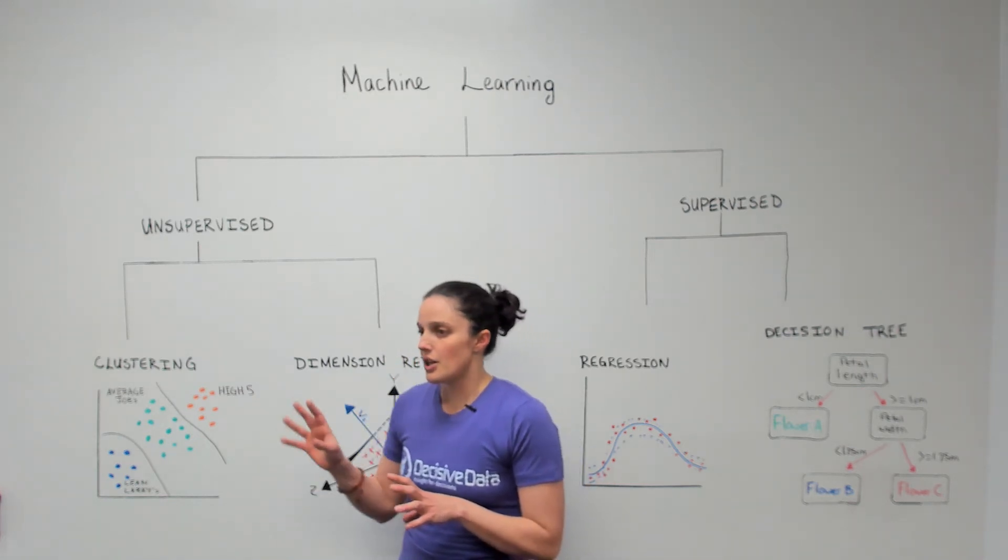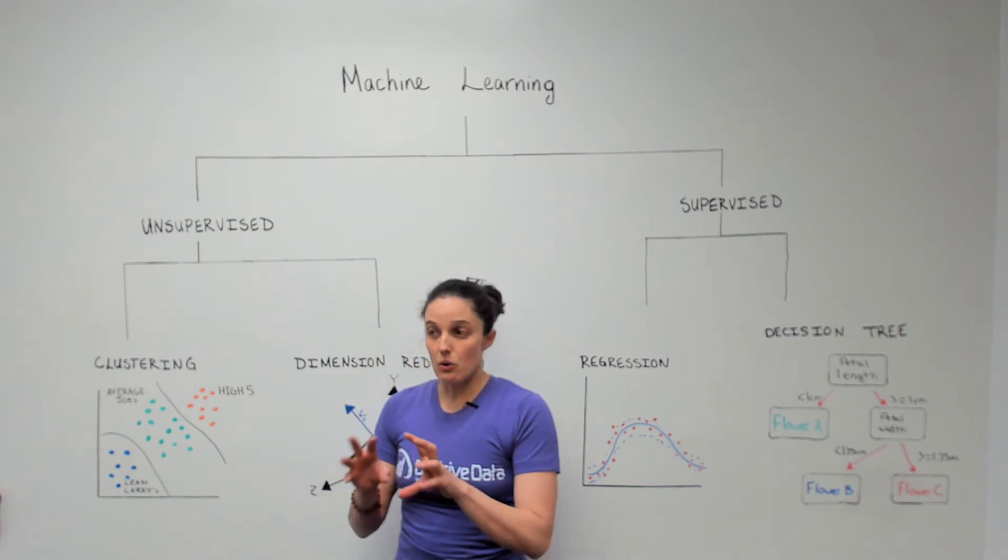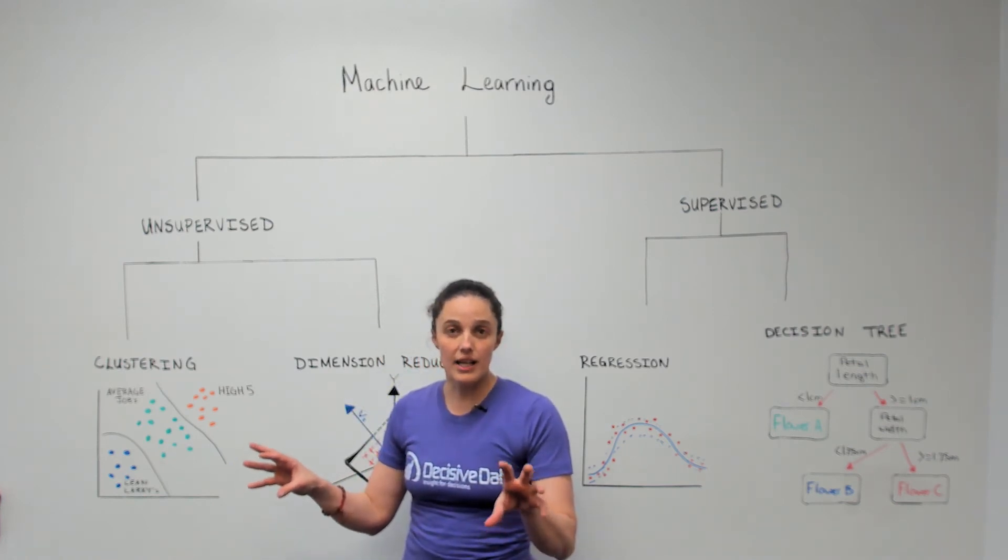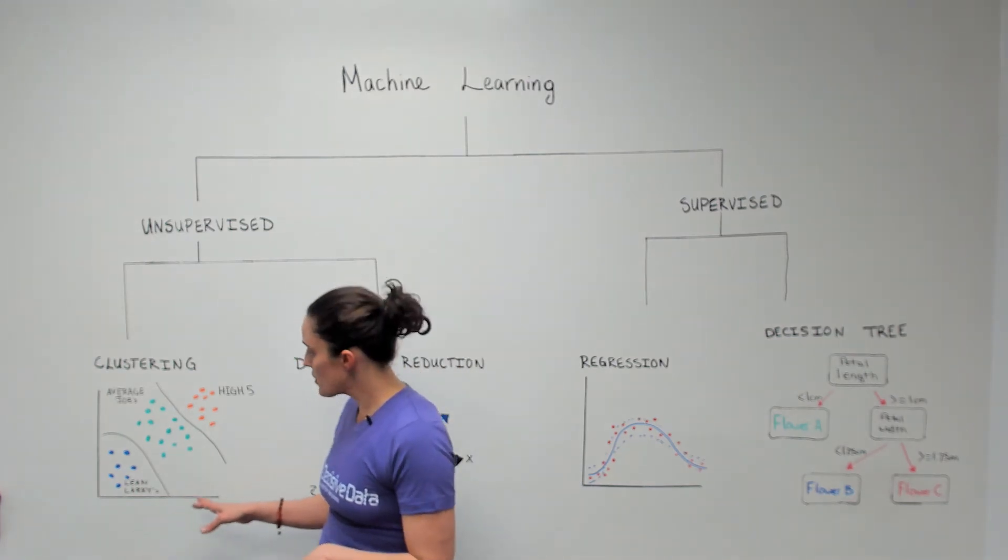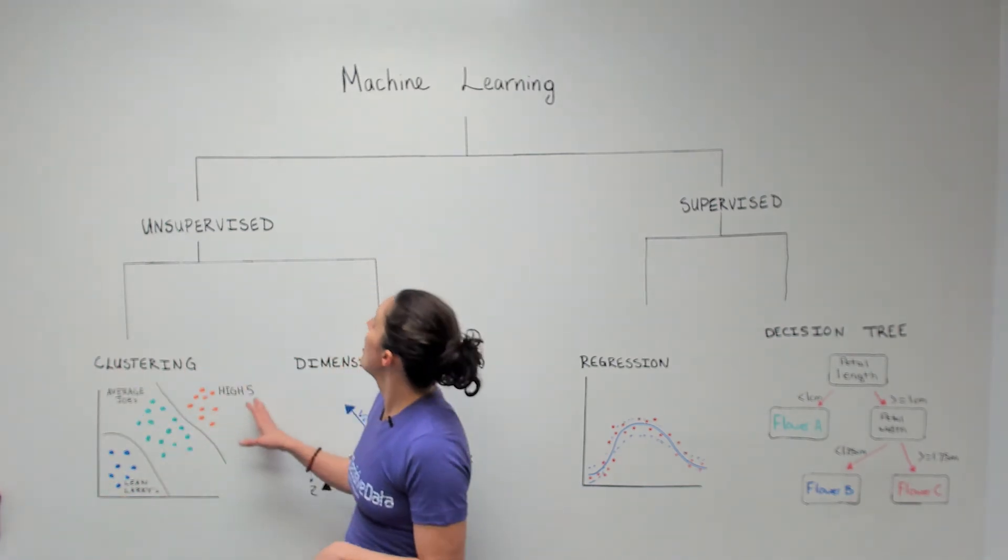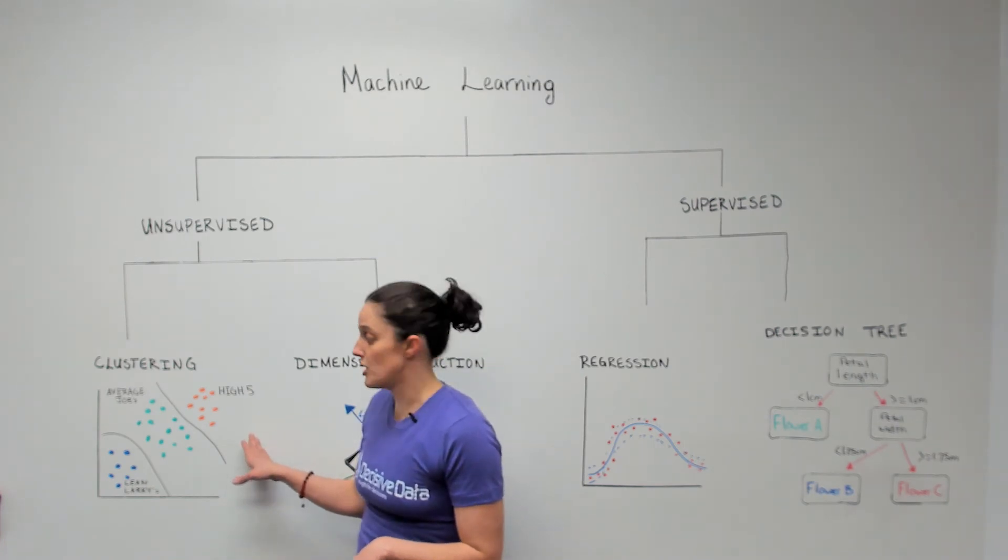We want to understand customers so that we can have targeted marketing campaigns. Let's take an example with cereal. So this is the final result of clustering unsupervised machine learning algorithm.